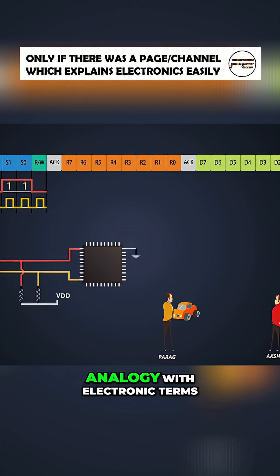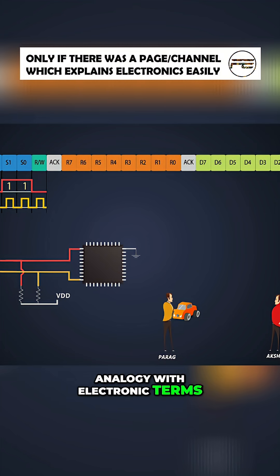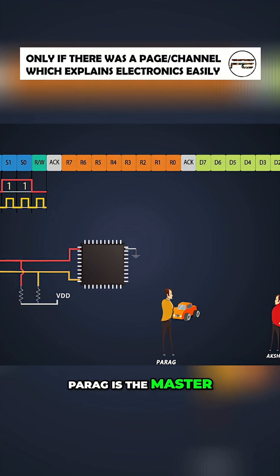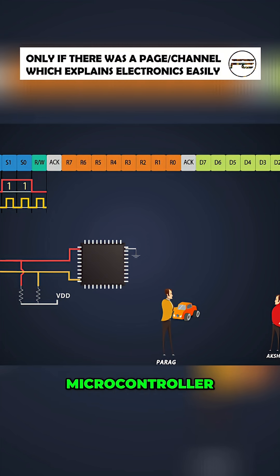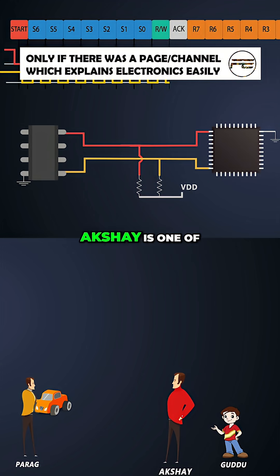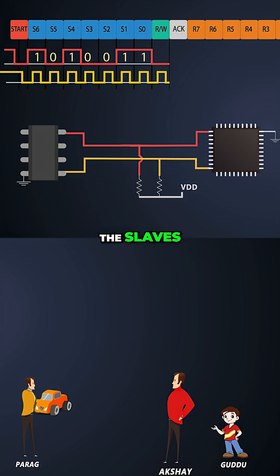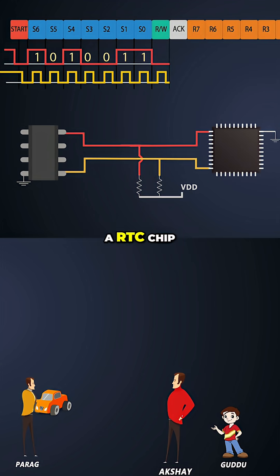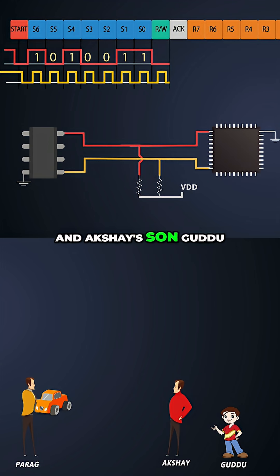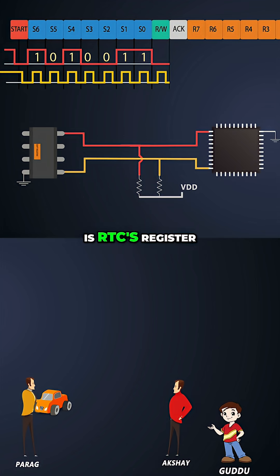Let's compare this analogy with electronic terms. Parag is the master in our case, i.e., the microcontroller. Akshay is one of the slaves — let's consider him as an RTC chip, and Akshay's son Guddu is the RTC's register.